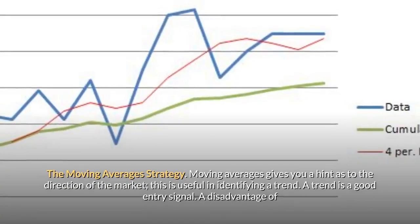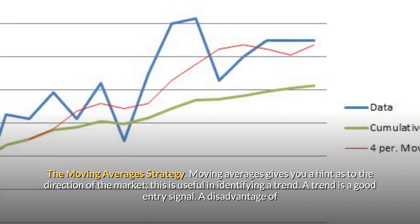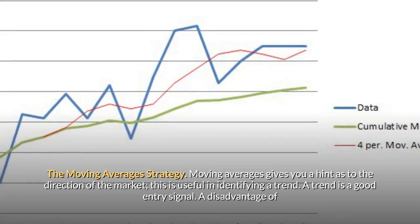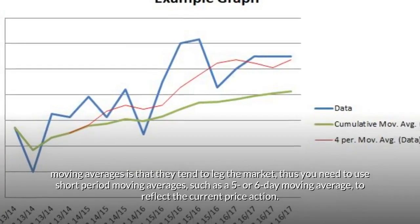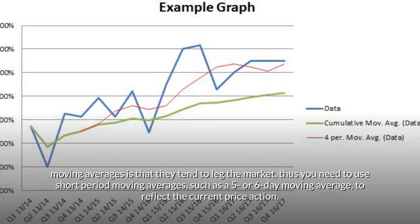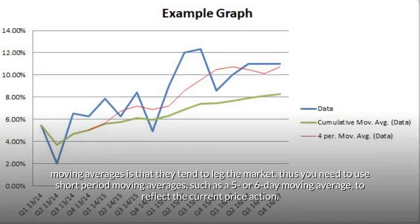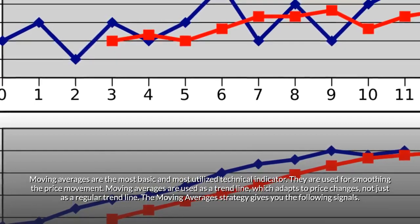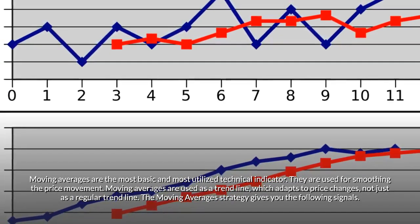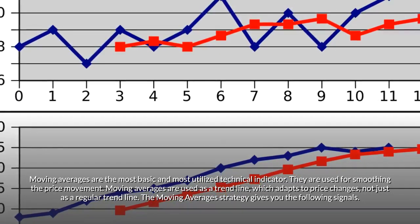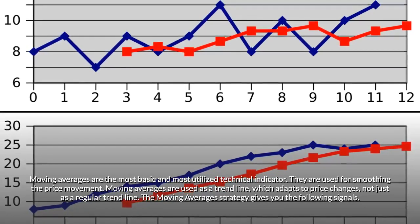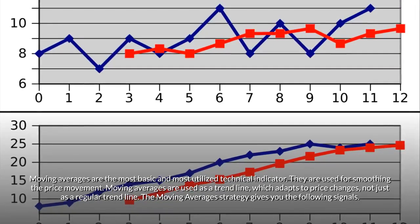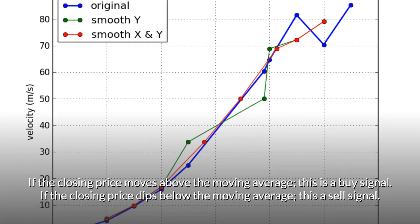The moving averages strategy — moving averages give you a hint as to the direction of the market, which is useful in identifying a trend. A disadvantage of moving averages is that they tend to lag the market, so you need to use short-period moving averages such as a five or six day moving average to reflect current price action. Moving averages are used for smoothing price movement and act as an adaptive trend line. Signals: if the closing price moves above the moving average, that's a buy signal; if the closing price dips below the moving average, that's a sell signal.